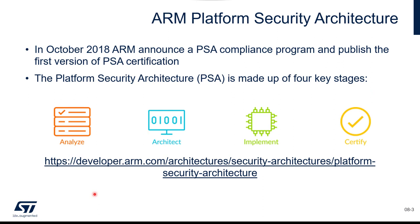This initiative started in 2018 with ARM's first version of PSA certification. This platform security architecture is made up of four key stages: analyze, architect, implement, and certify. In the analyze documentation you will find three TMSAs, which stand for Threat Model and Security Analysis. These are three different examples identifying the assets to protect, the threats, and how to mitigate them — a full security analysis.